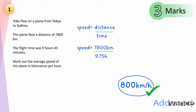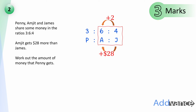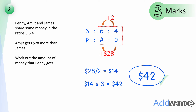That is the final answer: 800 km/h for three marks. Question two: Penny, Amjit and James share money in the ratio 3:6:4. Amjit gets $28 more than James. Work out the amount Penny gets. Amjit has 6 shares, James has 4 shares — that's 2 more shares equalling $28. So one share equals $14. Penny has 3 shares, so 14 times 3 equals $42. That is the final answer for three marks.